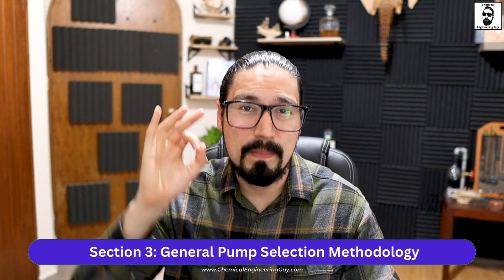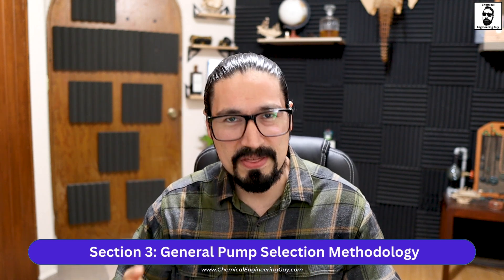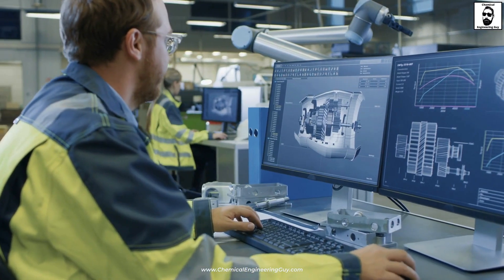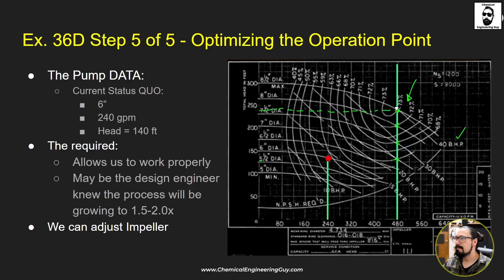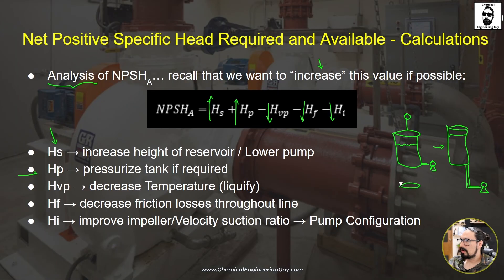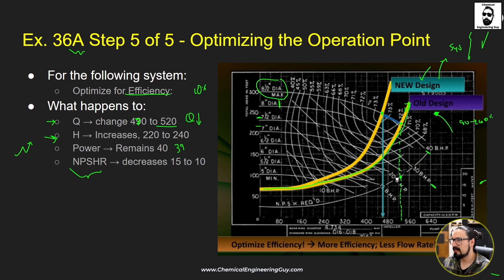Section number three is all about pump selection, the methodology that we're going to be using, understanding the pump operation, and more importantly, optimizing the pump. Being able to assess a system and assess the pump selection. In this specific case, we're going to be improving the efficiency of the pump, addressing cavitation, improving pump performance, decreasing energy use, and talking about the most common types of troubleshooting depending on the issue that you may encounter.